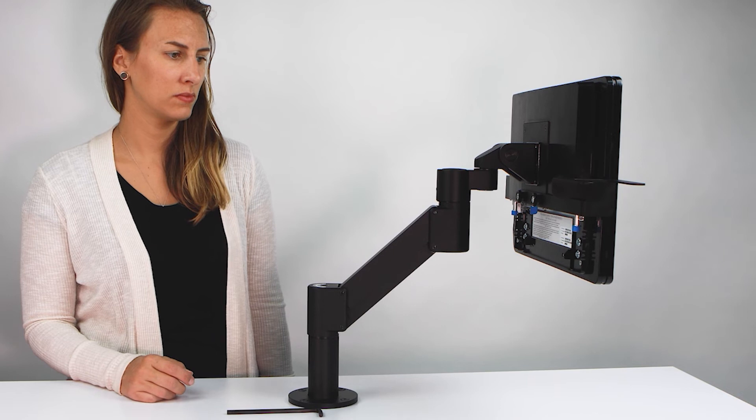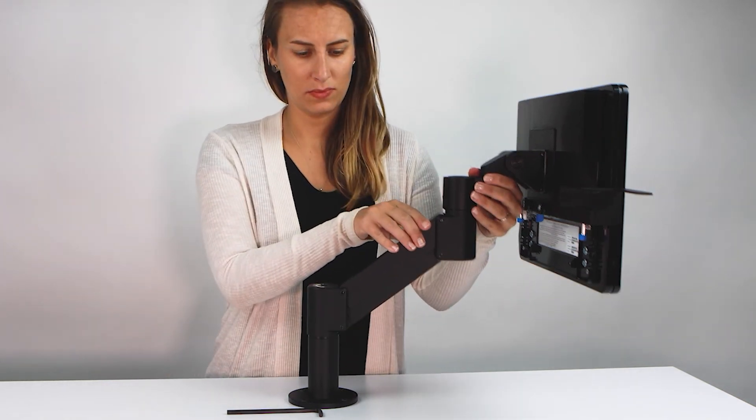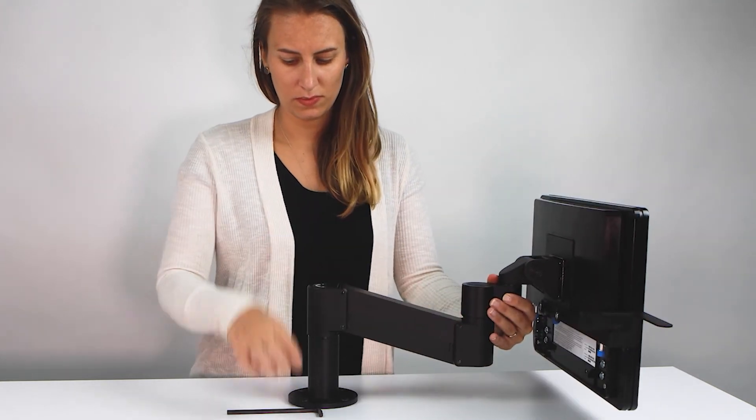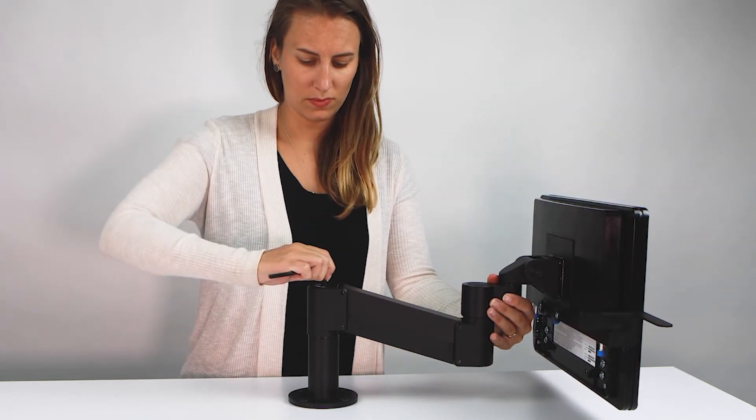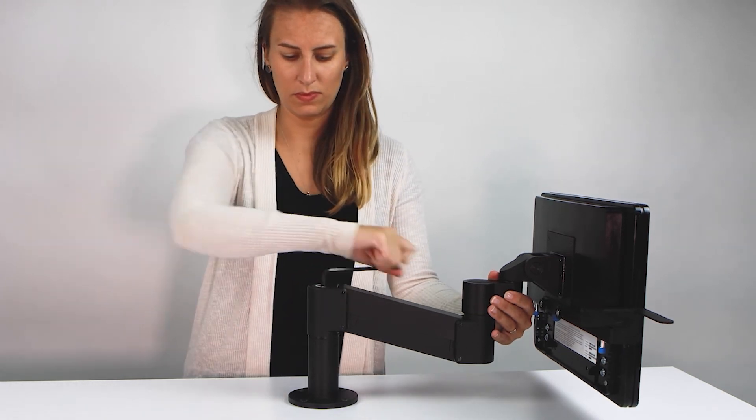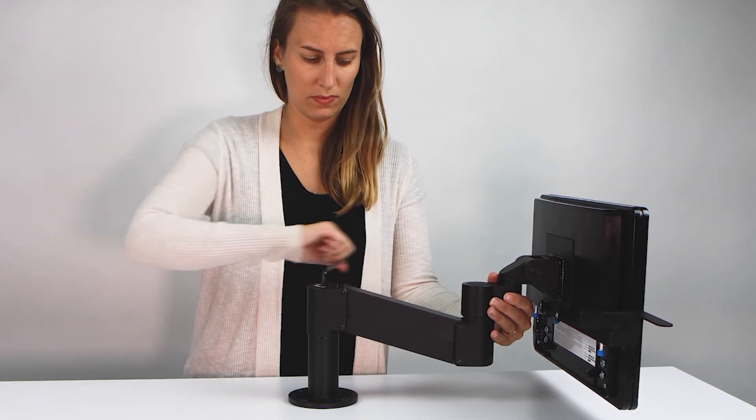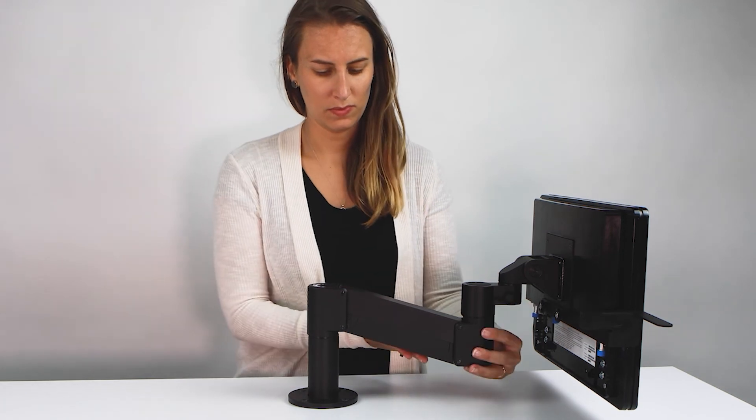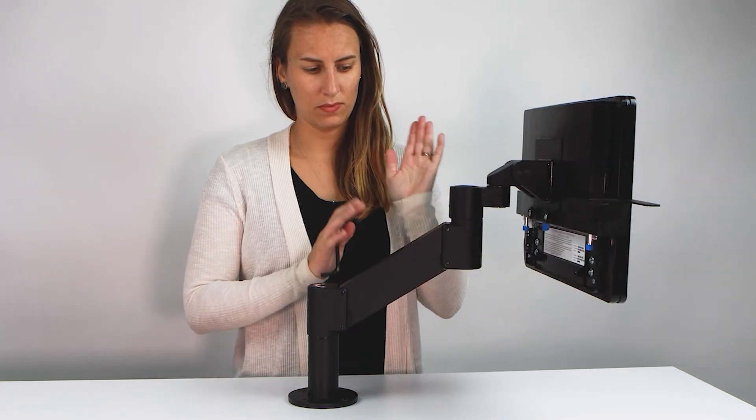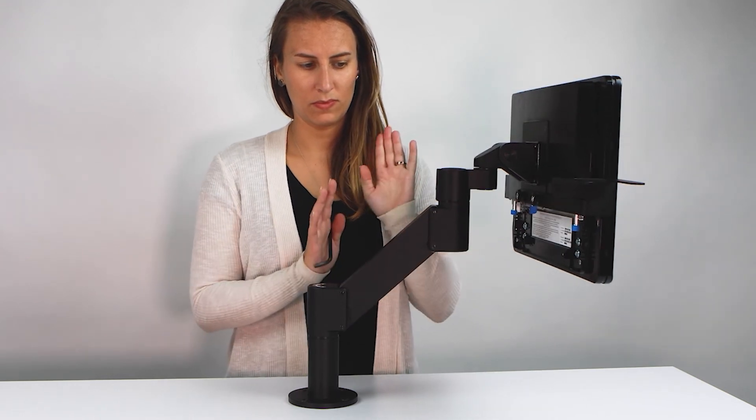Step 8. Counter balancing. Press the arm down to approximately parallel with the desk. Now, insert the 7-32 inch Allen wrench into the strength adjustment screw at the base of the arm. If the arm drifts upward, turn the adjustment screw clockwise. If the arm drifts downward, turn the adjustment screw counterclockwise. This may take up to 15 to 20 turns.